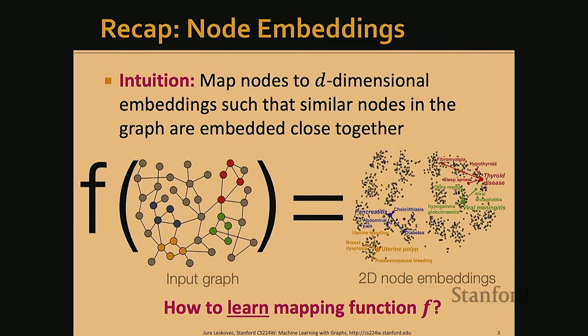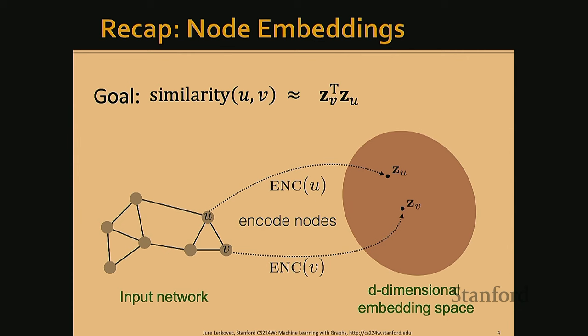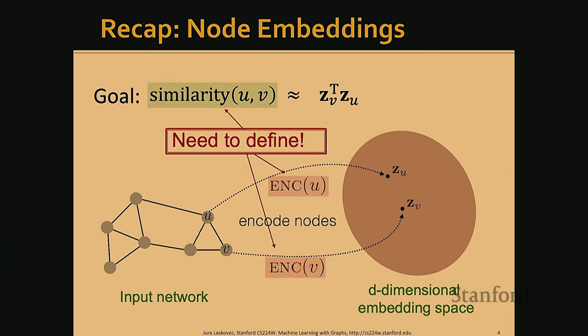Let's give a quick recap of what we learned in the previous lecture. The key concept was node embedding — we want to encode nodes in the network into a low-dimensional vector space. Specifically, we want to learn a function that takes an input graph and embeds it into a low-dimensional node embedding space. Here we project into two dimensions, and the key problem of machine learning on graphs is how we define this function f.